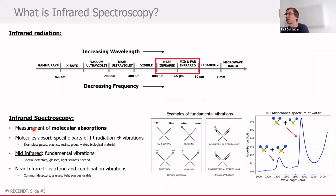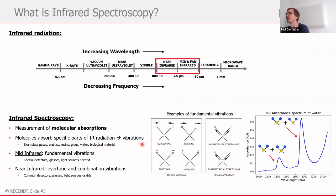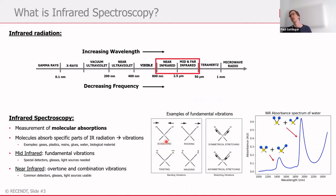In infrared spectroscopy we are interested in measuring molecular absorptions. When molecules interact with infrared radiation, they absorb this radiation at specific wavelengths. This is dependent on the molecular composition of the molecule — if you have a lot of CH bonds, for example, the molecule will absorb specific parts of the infrared radiation. This is also known as the fingerprint of the molecule.